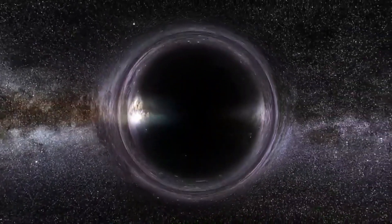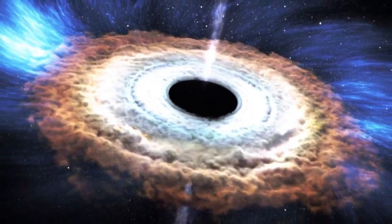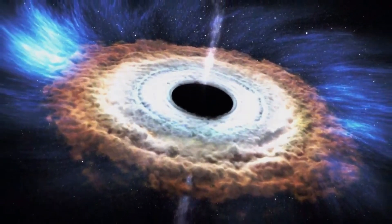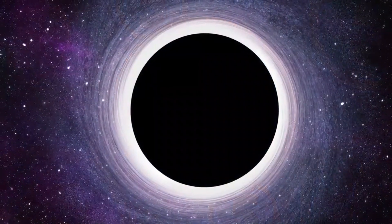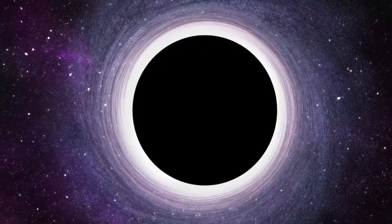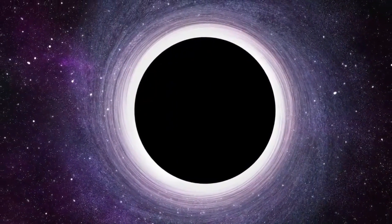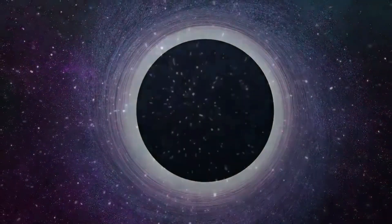York University astronomy professor Paul Delaney gave the following example in an article for the university's website. If our own sun were to miraculously transform into a black hole of the same mass, our planet would not discern any change in the gravitational force acting on it and would continue in the same orbit.